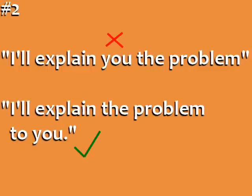Error number two: In this sentence, there are two objects — the direct object, 'the problem,' and the indirect object, 'you.' After 'explain,' we need to use 'to' before the indirect object, the person to whom we are doing the explaining. Also, it's more common to put the direct object first. So the correct sentence is: 'I'll explain the problem to you.'